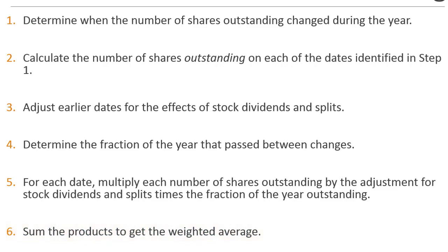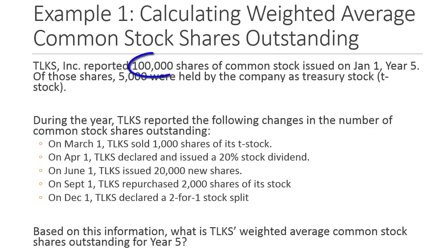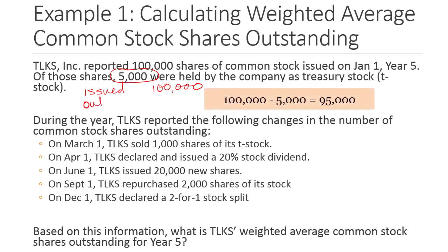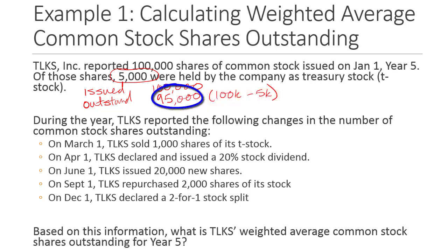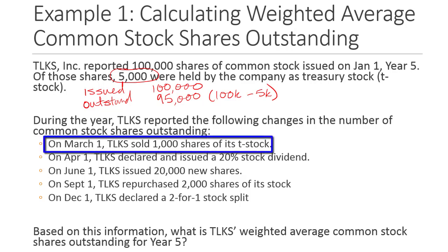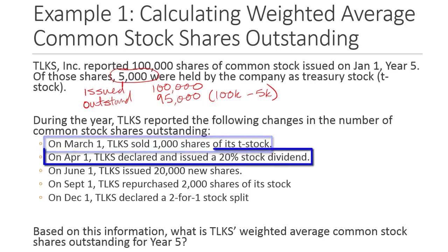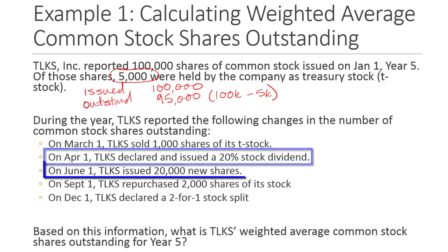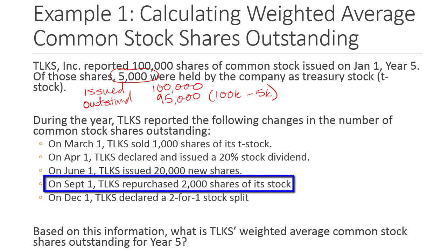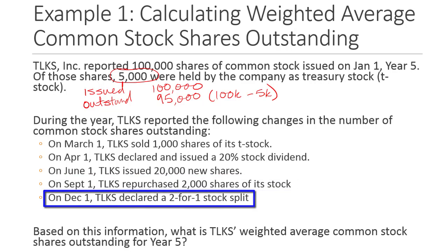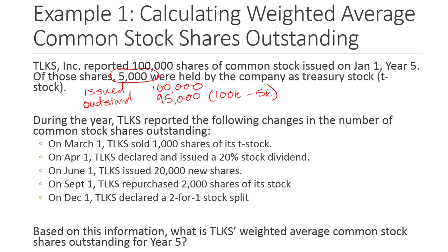Let's work through an example with TLKS Incorporated. They started the year with 100,000 shares issued, of which 5,000 were held as treasury stock — so shares outstanding at January 1 were 95,000. During the year: March 1, reissued 1,000 treasury shares; April 1, declared and issued a 20% stock dividend; June 1, issued 20,000 new shares; September 1, repurchased 2,000 shares as treasury stock; December 1, executed a two-for-one stock split.